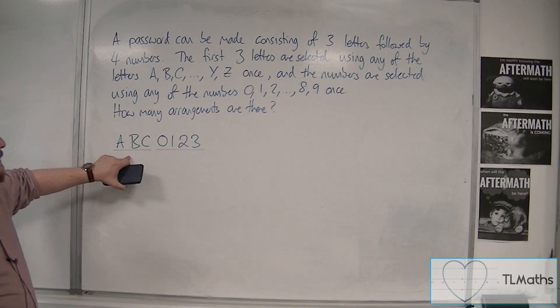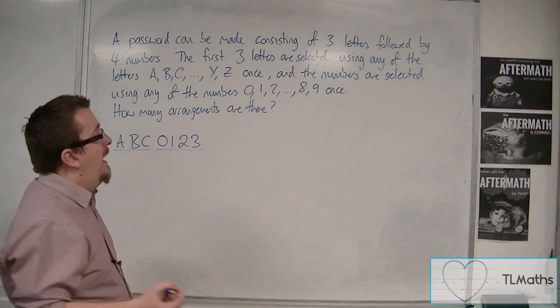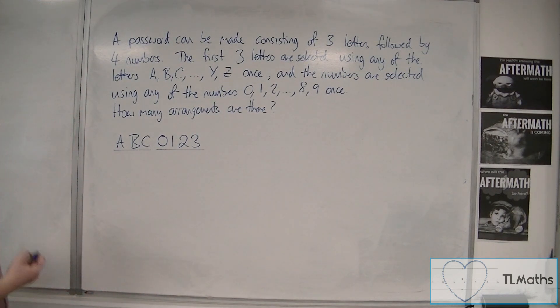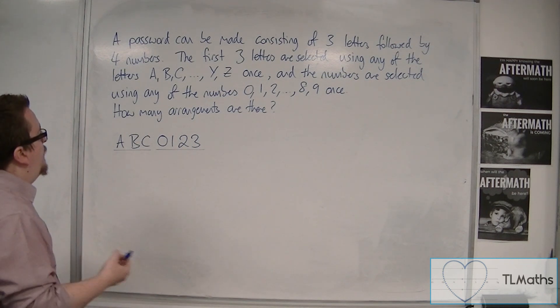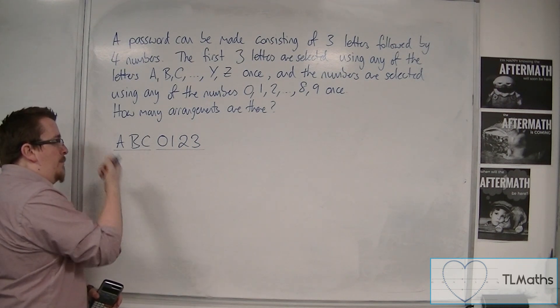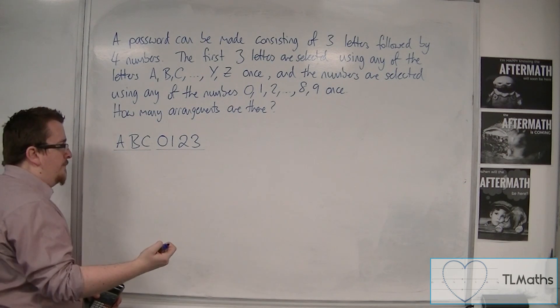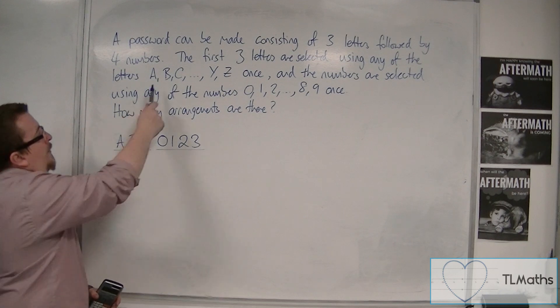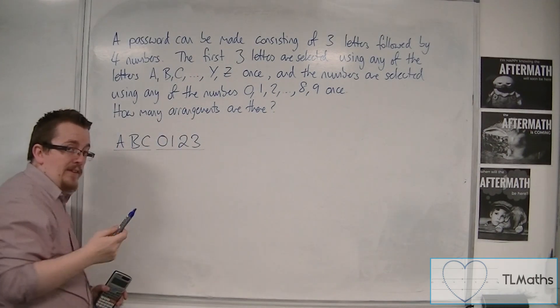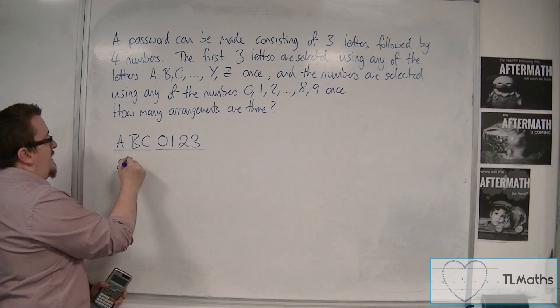So, because we've got three letters, and we can only use each letter once, this uses the permutation NPR, so we have out of, well, we've got 26 letters, so 26 letters.